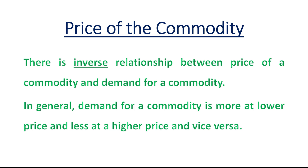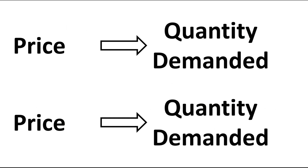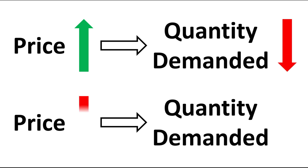In simple words, when price increases, quantity demanded decreases, and when price decreases, quantity demanded increases. That means there is an inverse relationship between the price and quantity demanded.